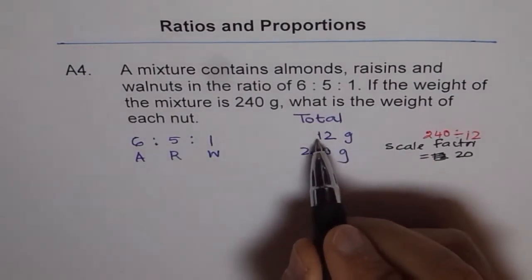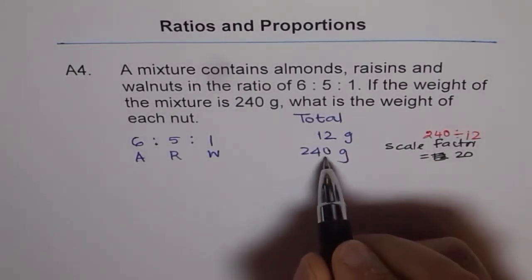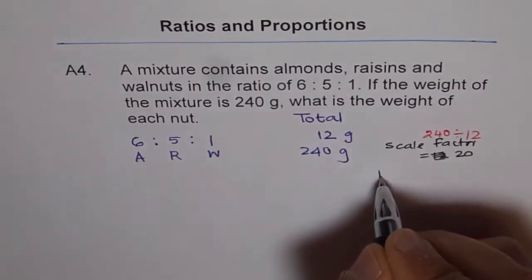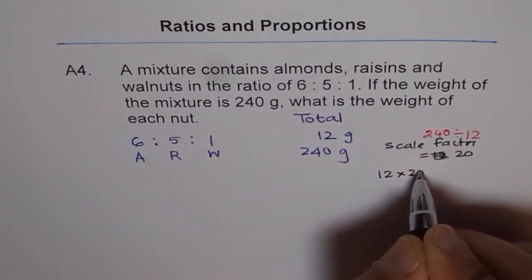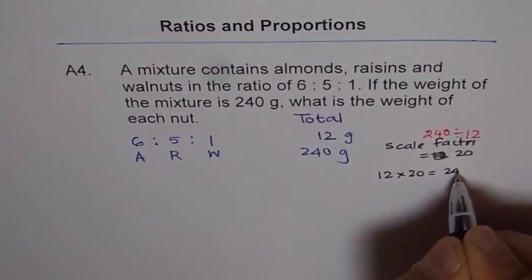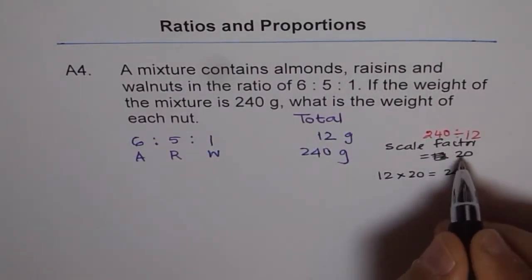So if I multiply 12 by 20, I get 240, correct? Let's check. 12 times 20 is 240, correct? So we have a scale factor of 20.